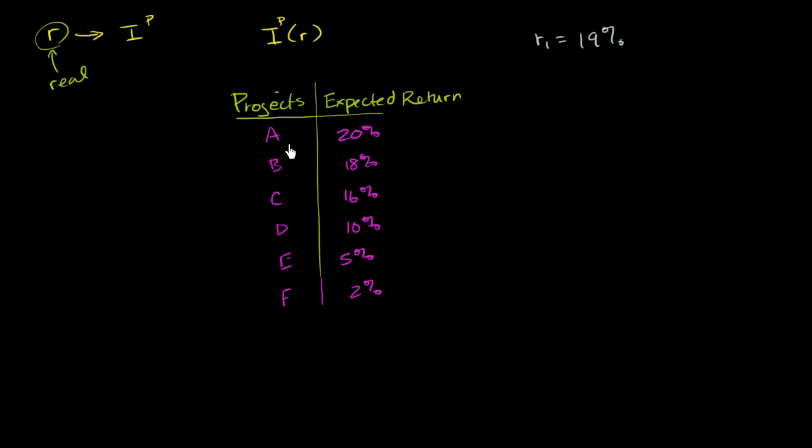Well, if someone has the cash, they say, well, I could either lend my money out for 19% or I could do this project and get 20%. So if they have the cash, they would definitely do this. And if they don't have the cash, they could say, well, I could borrow money for 19% and I can invest it at 20%. I'll make money off of that. So project A will definitely be done.